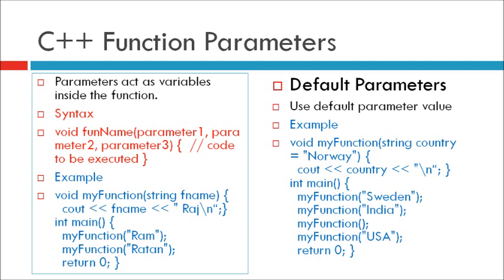Now see default parameters. A default parameter value can also be used by the equal sign. If we call the function without an argument, it uses the default value. For example: